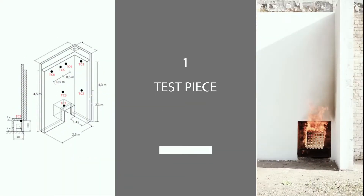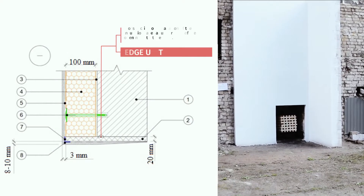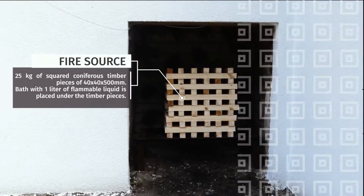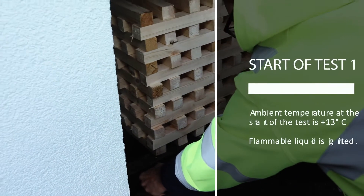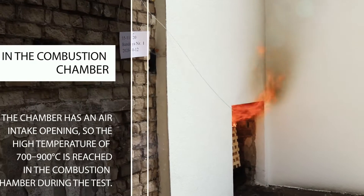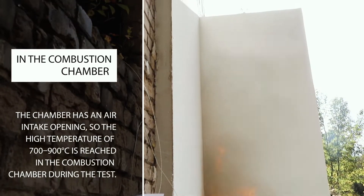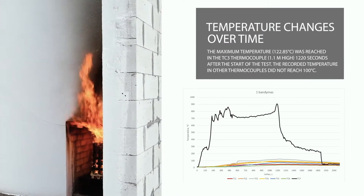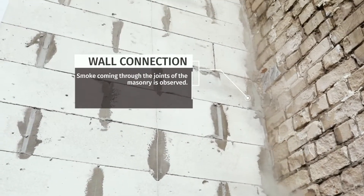First test piece. The cross section of the thermal insulation layer at the upper edge of the opening of test specimen number 1 is shown. The fire is produced by 25 kg of coniferous timber, with flammable liquid ignited at the beginning of the test. Ambient temperature is +13°C. The combustion chamber has an air intake, so the temperature in the chamber reaches 700 to 900°C during the test. The diagram shows that the maximum temperature, exceeding 122°C, is reached in thermocouple TC3 about 20 minutes after the start of the test.